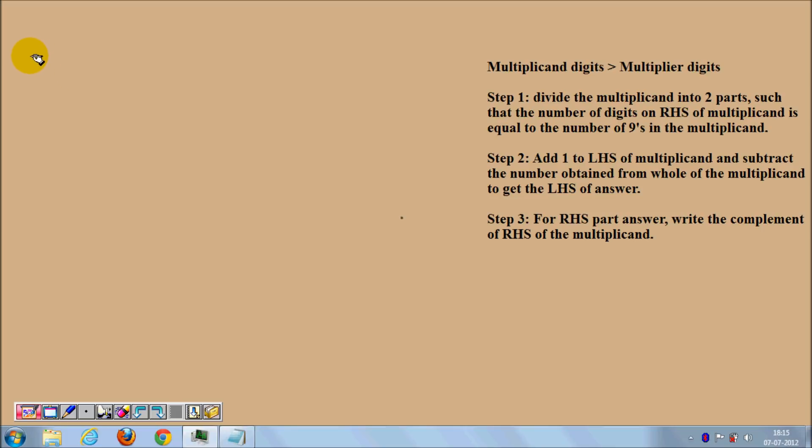Let's do it with an example. Let's say we have a number 378 and we have to multiply it with 99. So here we have number of 9's as 2, which is less than the number of digits in the multiplicand.